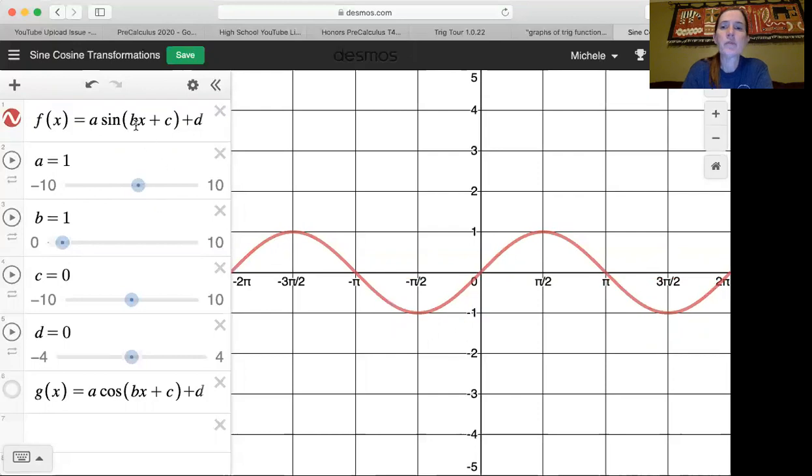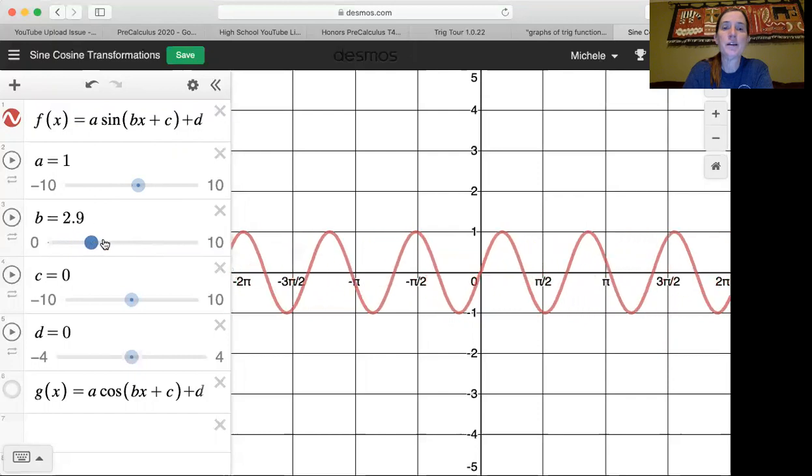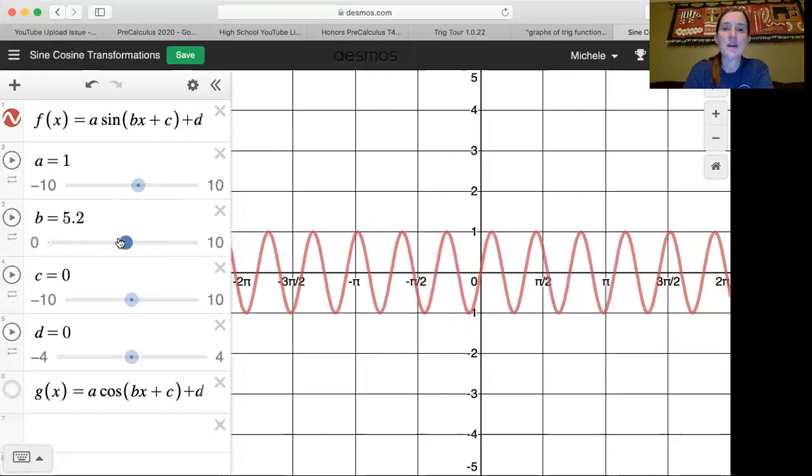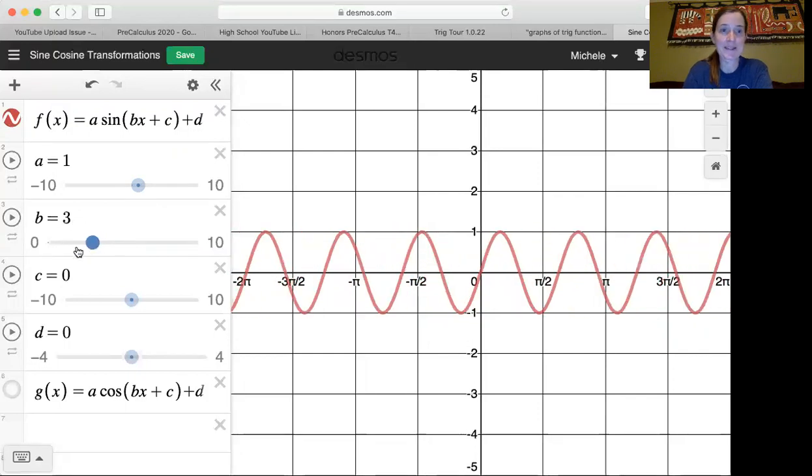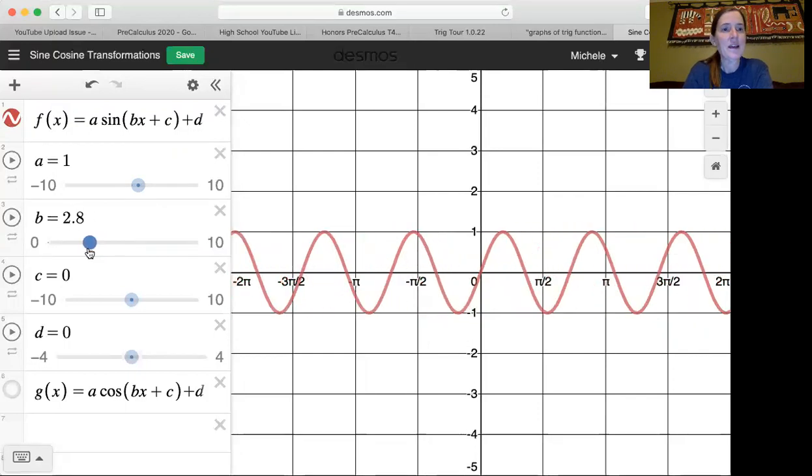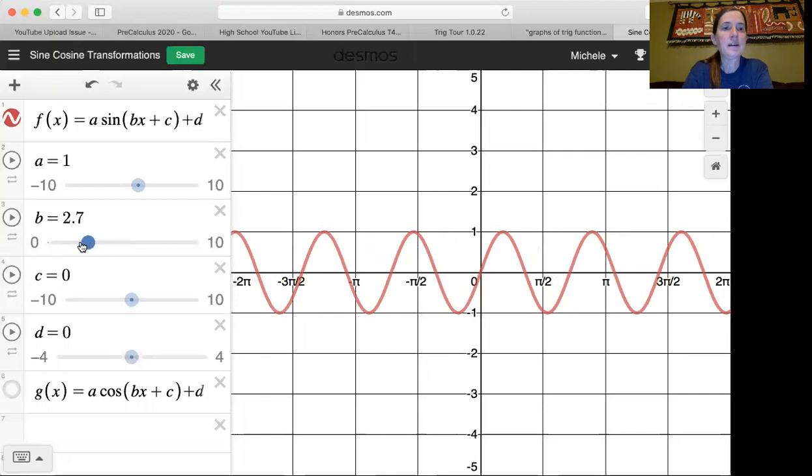b represents the number of cycles between zero and two pi. Right now I have b set at one. And if you look between zero and two pi, here is one cycle of sine. As b increases, the number of cycles between zero and two pi increases. And then if you play with it and animate it, it's kind of fun. So play.